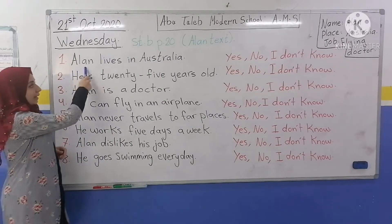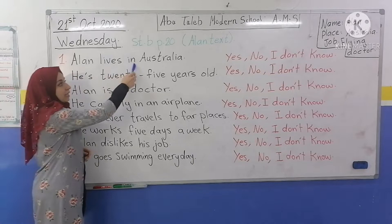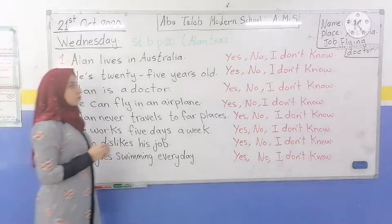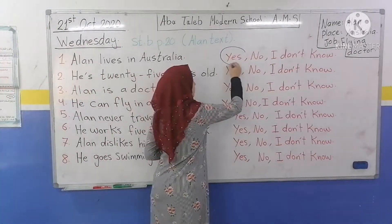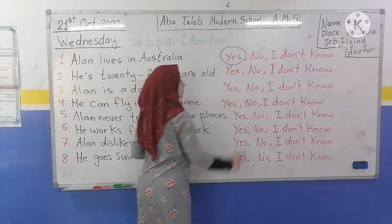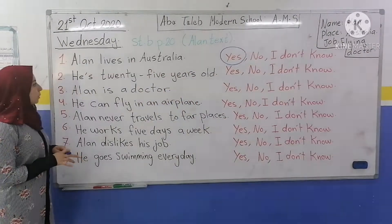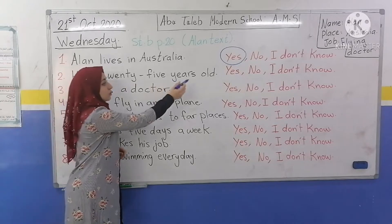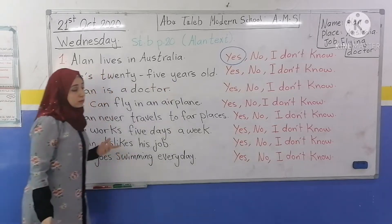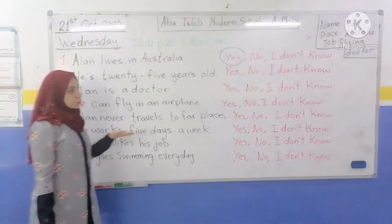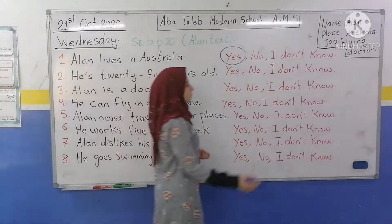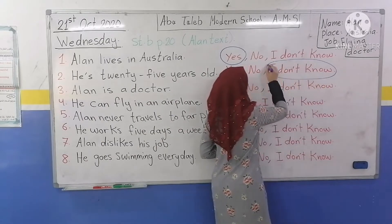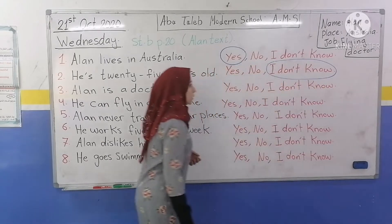Number 1: Alan lives in Australia. Yes, he lives in Australia. Circle around Yes. Number 2: He's 25 years old. We don't know. Circle around I don't know.